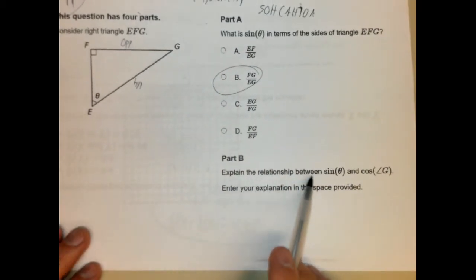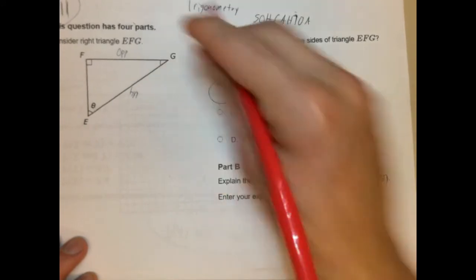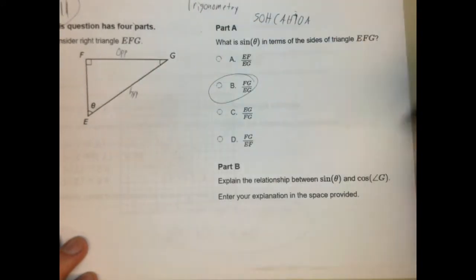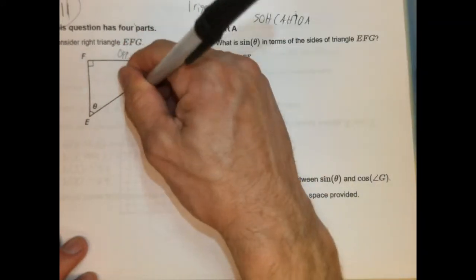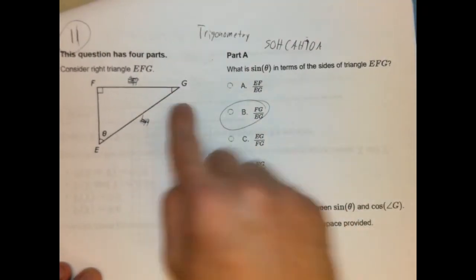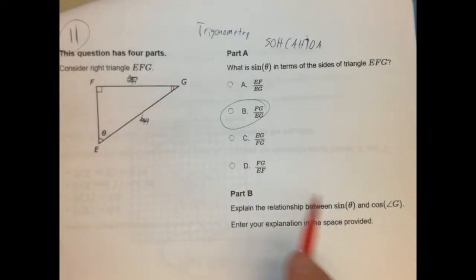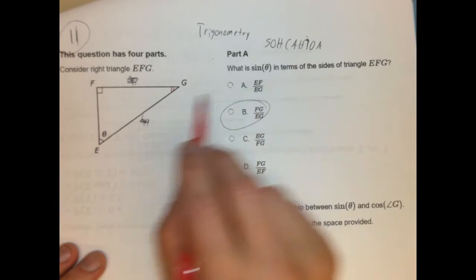Okay, explain the relationship between sine of theta and cosine of angle G. So let's say we're talking about angle G. I'm actually going to cross these out. I'm going to cross these out for a second so that's not confusing. So we're talking about this one now. I'm going to do a different, I'll do two arcs so it doesn't look like the other one. So cosine of G, all right. So cosine is adjacent over hypotenuse.